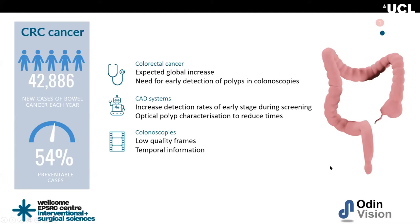During a colonoscopy, the bowel is inspected with a colonoscope — the camera is introduced to the rectum and the bowel walls are inspected for polyps, which are small protrusions that can develop into cancer. It's important to first detect all polyps and second, make a decision about what to do depending on the type. Not all polyps develop into cancer, so we can either leave it, not resect it, or not send it to histopathology, saving time and costs.